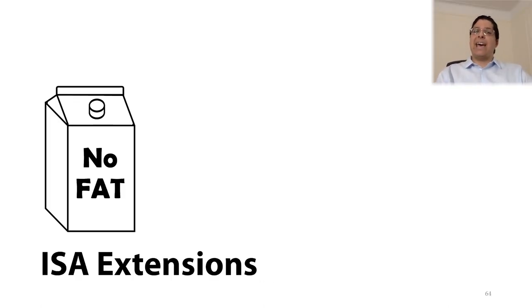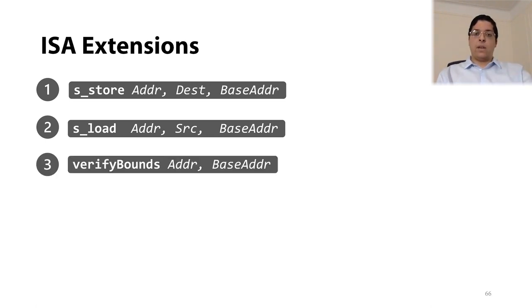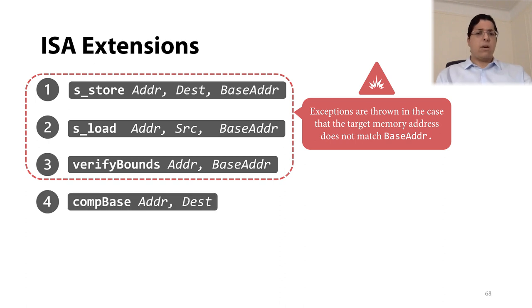Hello, everyone. I am Mohamed Tarek, and I will be your host during the second part of this talk. In order to implement NoFat, we add the following ISA extensions. We use new store and load instructions with three register operands to hold the memory address, destination or source operand, and the trusted base address. We also use a verify bounds instruction in order to verify the allocation bounds of pointers that are stored in memory or moved from one function to another. Exceptions are thrown in the case that the target memory address does not match the base address. Finally, we use compute-base instruction to compute the trusted base address whenever a pointer is loaded from memory.